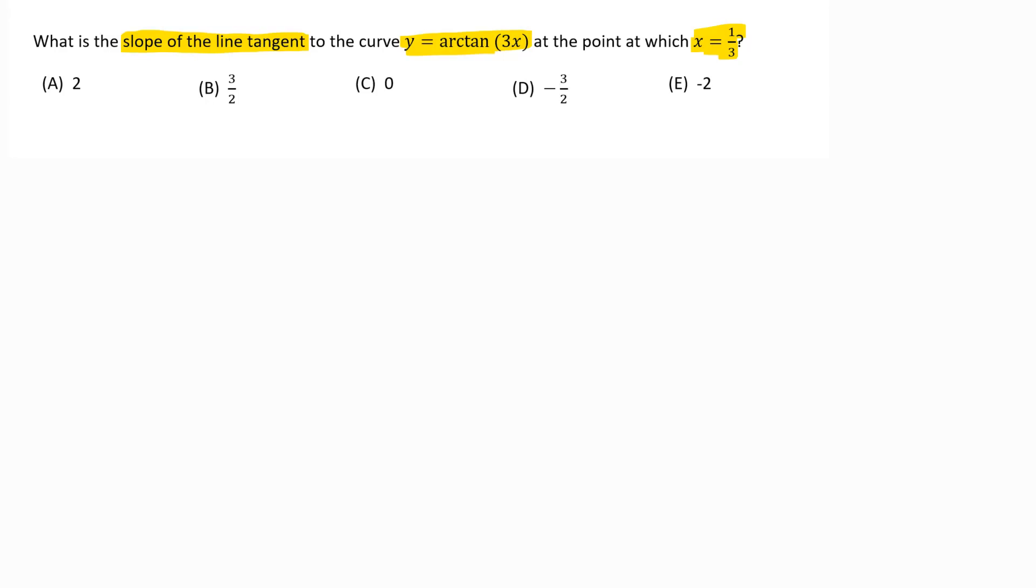So what this problem is telling you to do, when you see that slope of the line tangent, that's your derivative at a point. So derivatives give us the slope of the tangent line at a specific point. What they're asking us to find is the slope of the tangent line at x equals one-third. So really we're trying to find y prime of one-third right now.